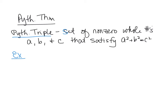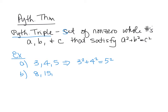If we look at an example, a Pythagorean Triple might be something like 3, 4, and 5, because 3 squared plus 4 squared equals 5 squared. Another example of a Pythagorean Triple would be 8, 15, and 17.